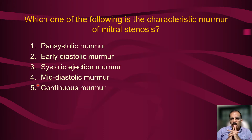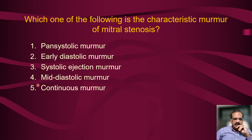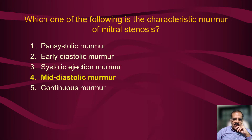As a clue: during which phase of the cardiac cycle does blood flow from the left atrium to the left ventricle through the mitral valve? It is diastole. So if the valve is stenosed and blood is not flowing easily, it should of course produce a diastolic murmur. The correct answer is mid-diastolic murmur.